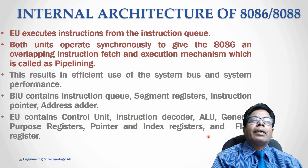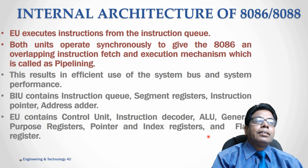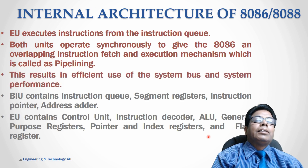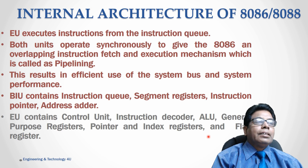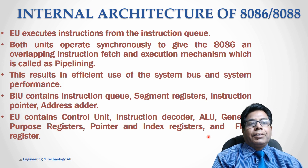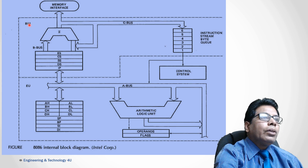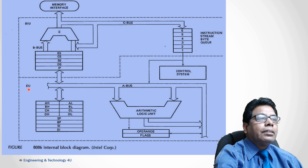Both units operate synchronously to give 8086 an overlapping instruction fetch and execution mechanism, which is called pipelining. This pipelining results in efficient use of the system bus. The BIU contains the instruction queue, segment registers, instruction pointer, and address adder. The EU contains the control unit, instruction decoder, ALU, general purpose registers, pointer and index registers, and flag register. In the diagram you can see a clear partition between the BIU and the execution unit.